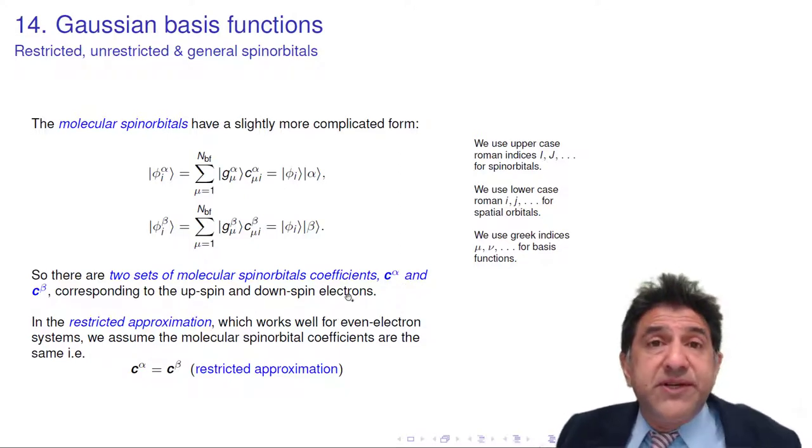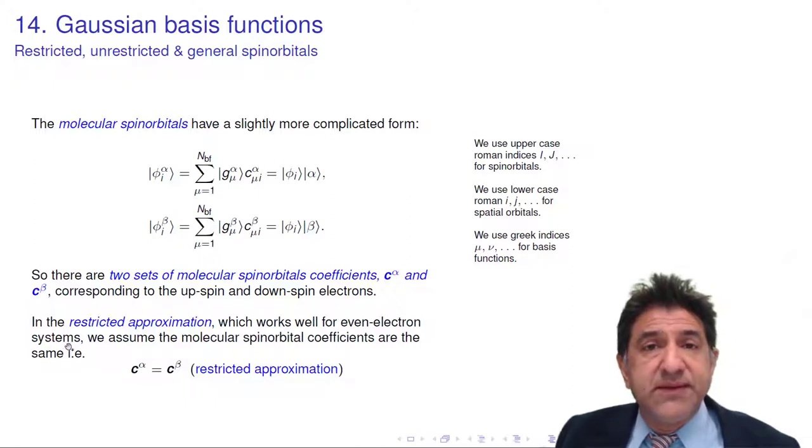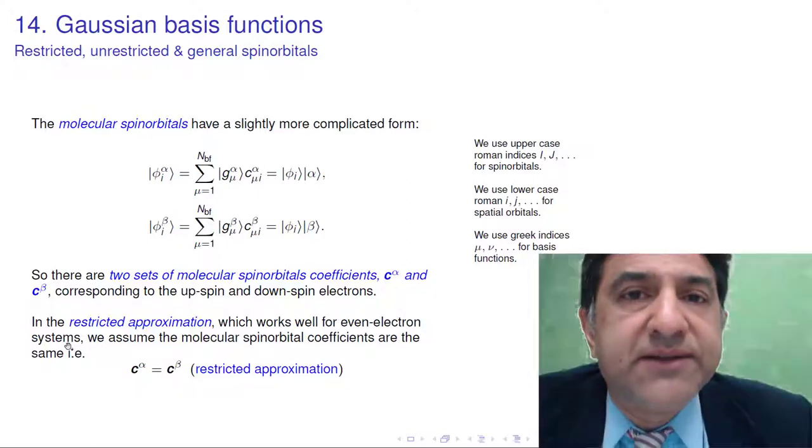Now we have a choice. It turns out that in the restricted approximation, which is the one we use most commonly, and which works for even electron systems, most systems in chemistry are even electron systems, because radicals tend to be, they do exist, but they're a little bit more reactive.